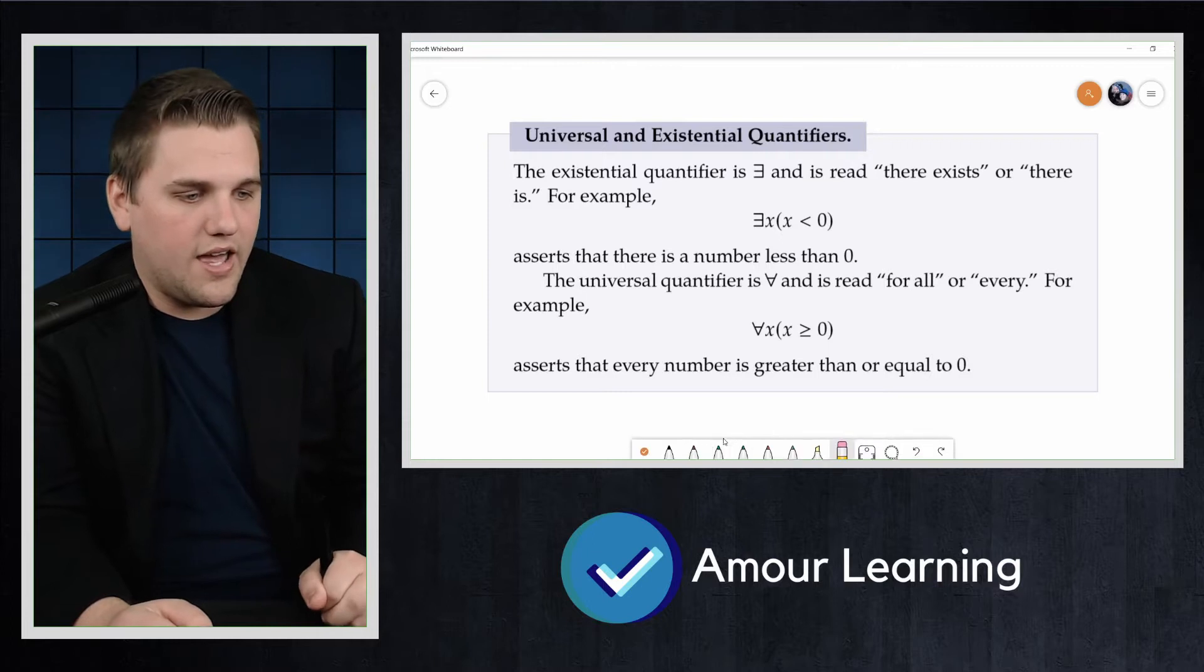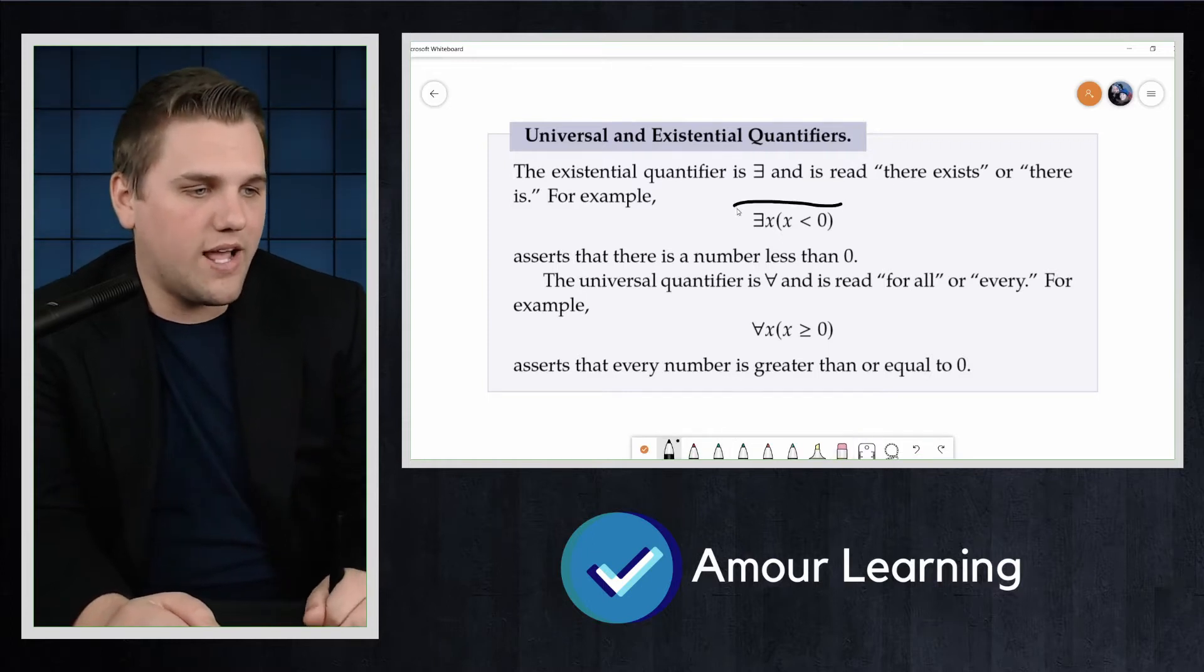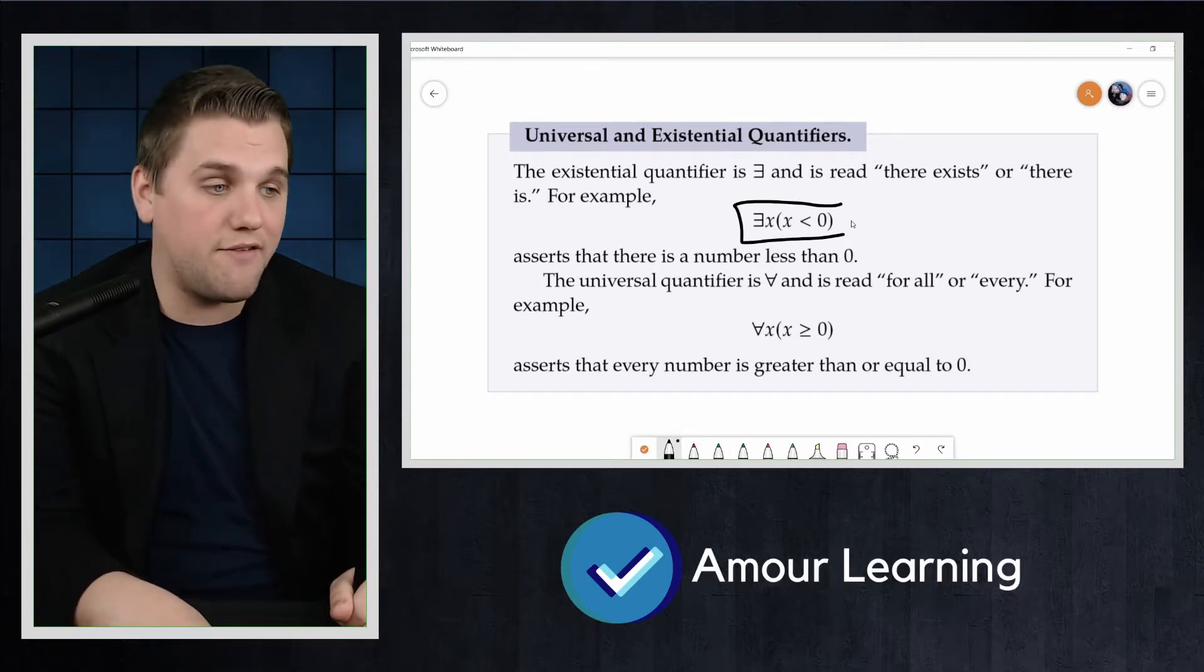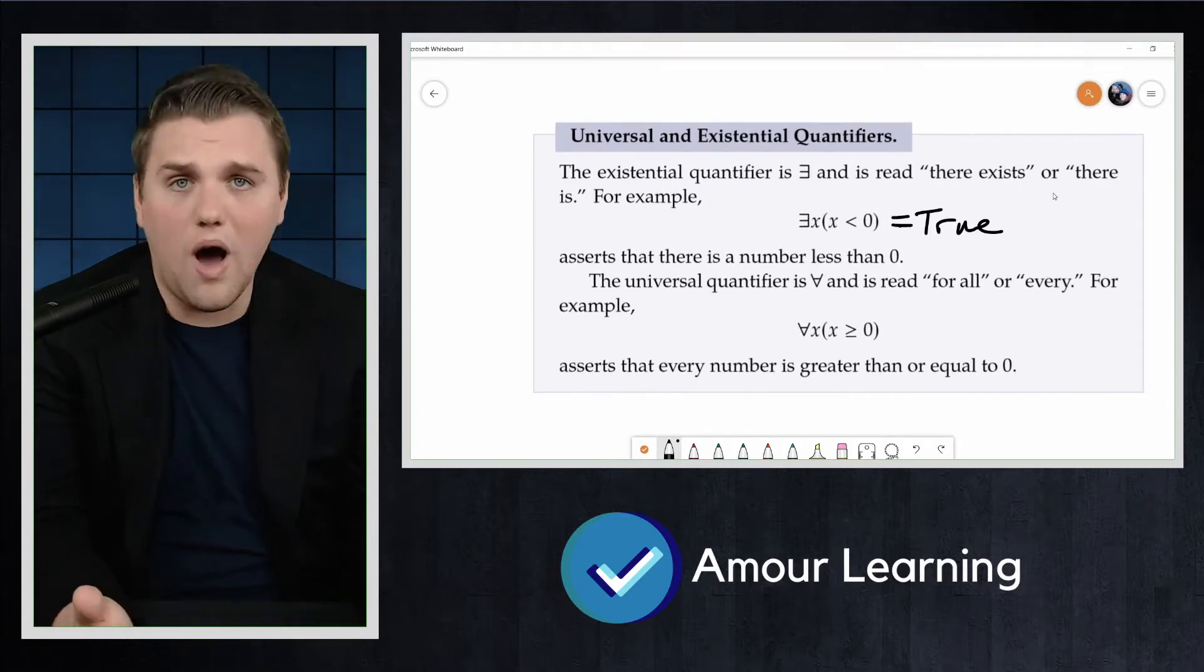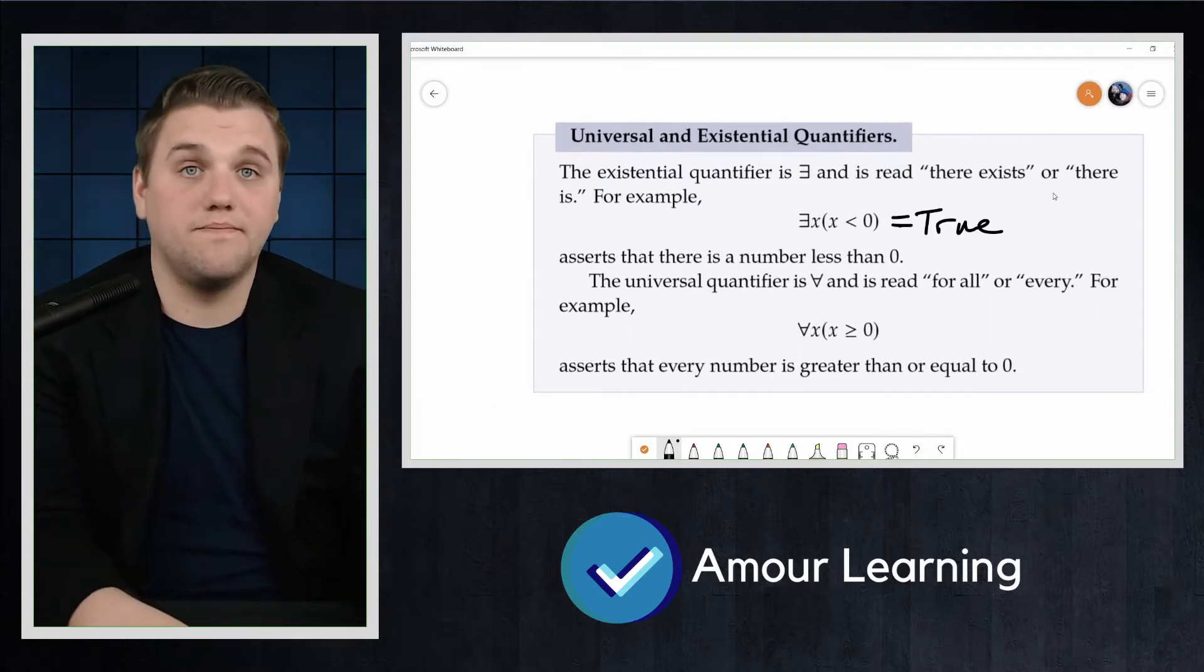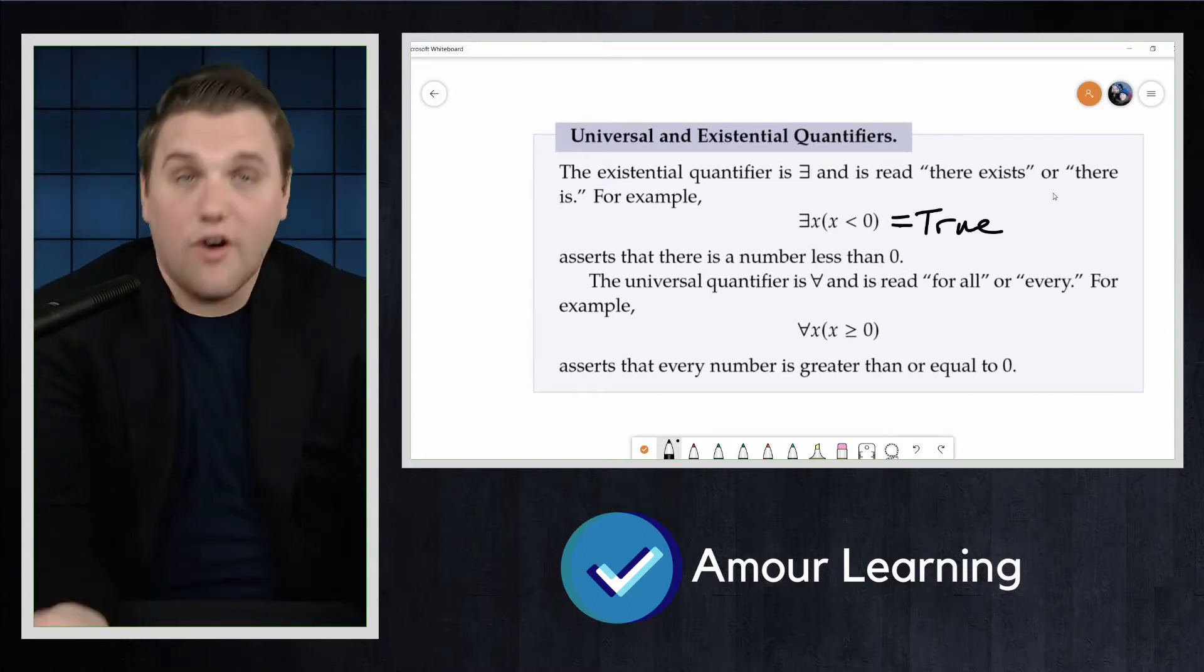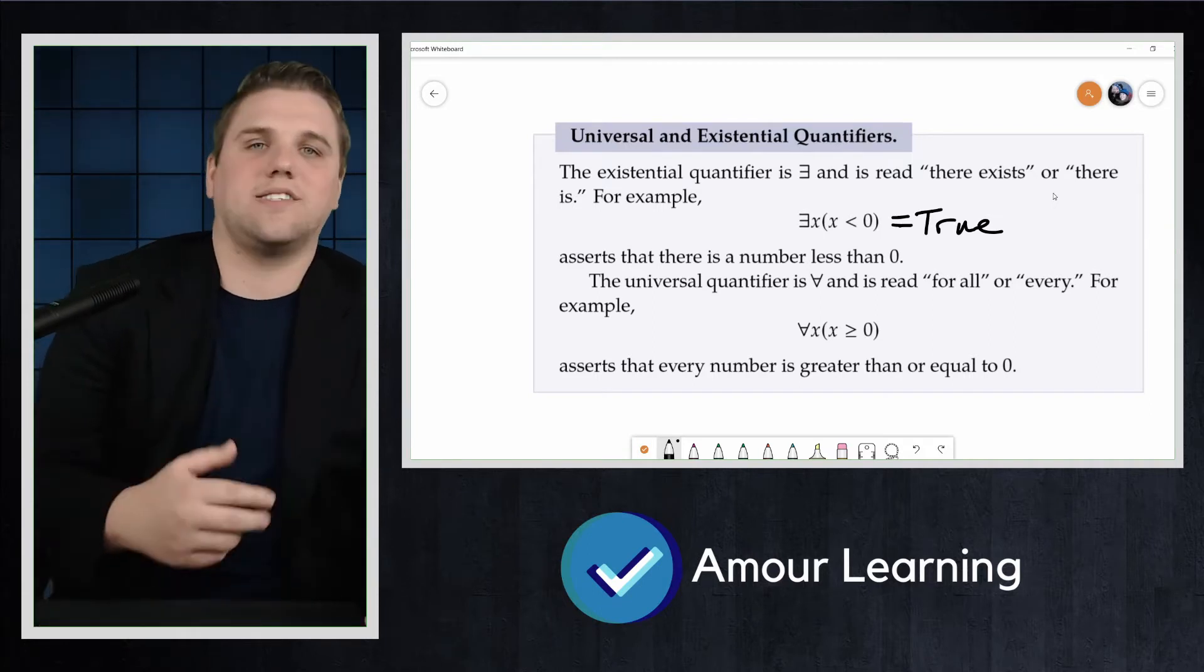So this, what you're looking at is a statement. That right there is a statement. And in fact, it's true. Why? Well, negative one. Negative one is less than zero. And so there exists an X such that X is less than zero.